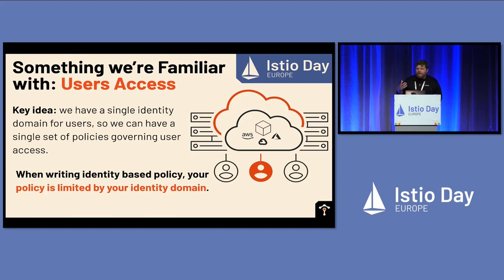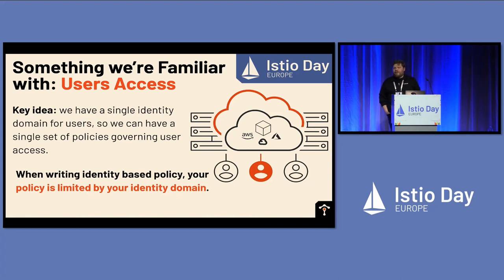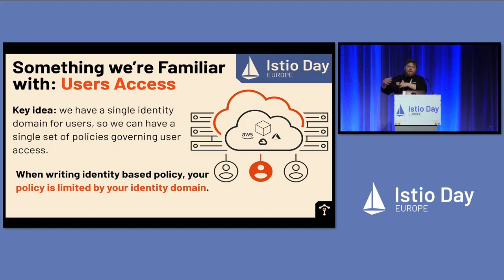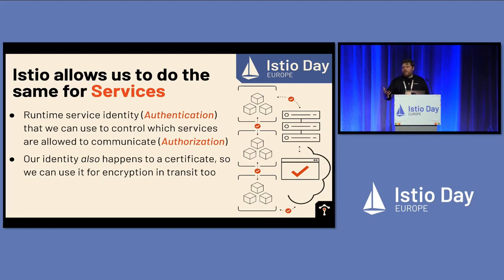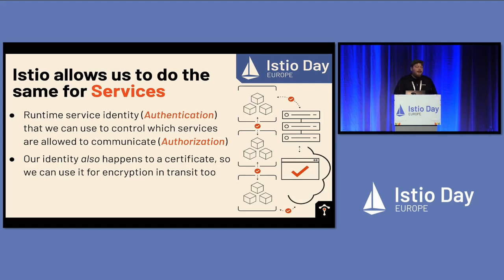One key idea I want folks to take away is that when we're writing identity-based policy, our policy is limited in scope by the identity domain. A little bit later in some of the lightning talks, we're going to have talks around things like federation to help facilitate policy that spans further. But one of the key ideas I want people to take away is this: as we move out of network-based policy and into identity-based policy, the identity domain is going to be your key limiting factor. And it's exactly the same when we move to talk about services. One of the most novel pieces that Istio brought to bear is that we can start to do that for services too. We can issue a strong service identity — a SPIFFE identity — and use that to authenticate and authorize our services at runtime. And because this happens to be an X.509, we can also use it for encryption.